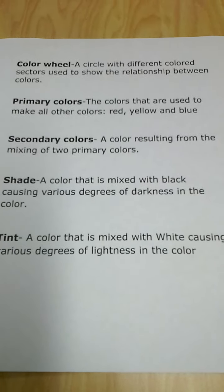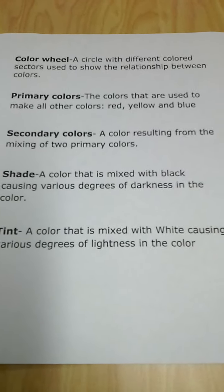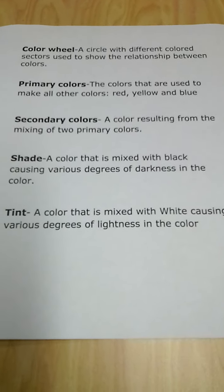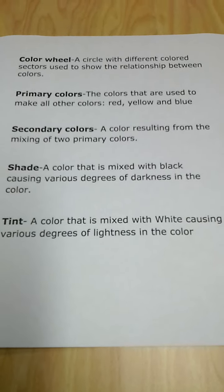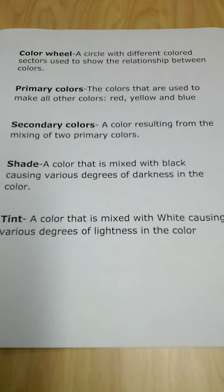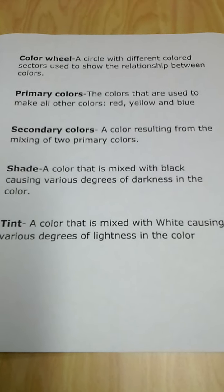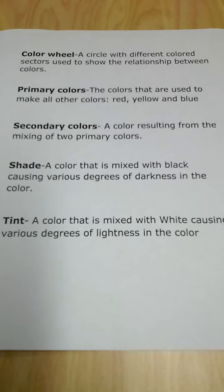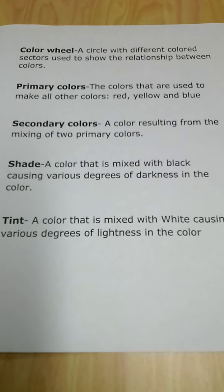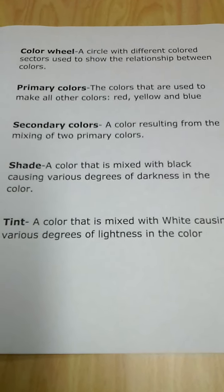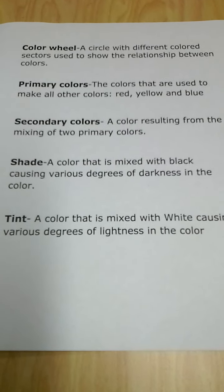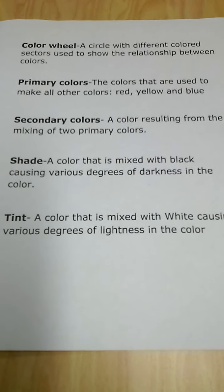This is going to be the beginning of our color theory unit. These are going to be the definitions we'll be using for this unit. The very first one is color wheel — a circle with different colored sectors used to show the relationship between colors. Primary colors are the colors that are used to make all other colors: red, yellow,